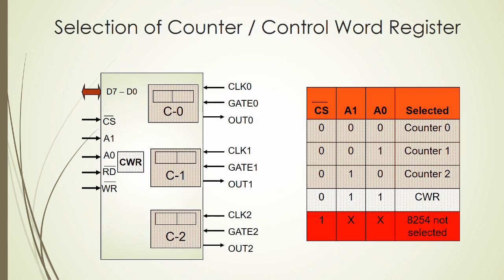Counter selection uses CS bar along with A1 and A0, similar to 8255 port selection. If CS bar, A1, and A0 are all 0, counter 0 is selected. If A0=1, counter 1 is selected. If A1A0 = binary 10, counter 2 is selected. For the control word register, A1A0 must be 11 with CS bar = 0. If CS bar is 1, the 8254 is not selected and A0/A1 are don't-care.